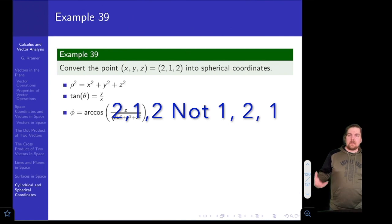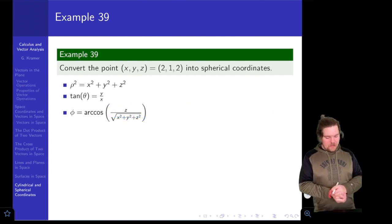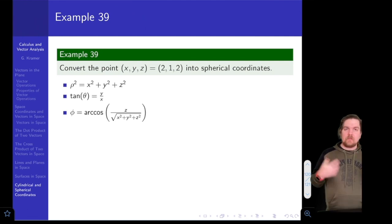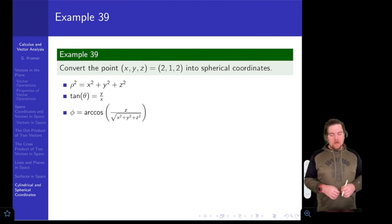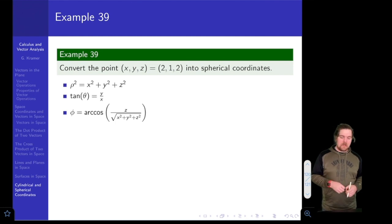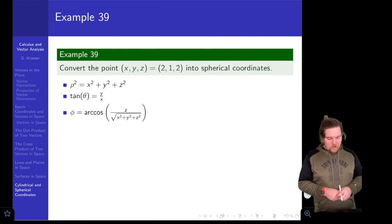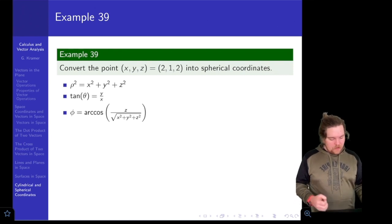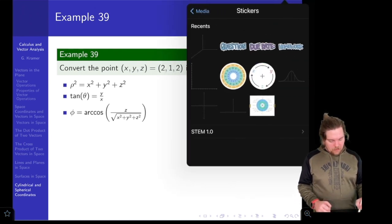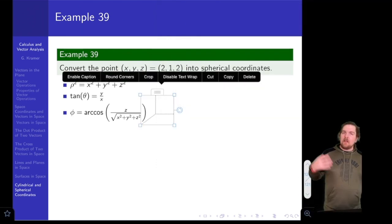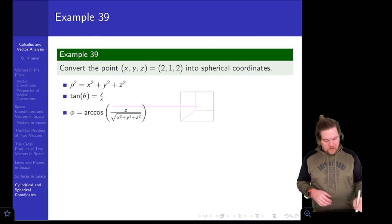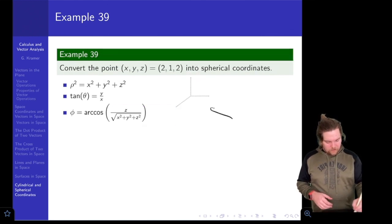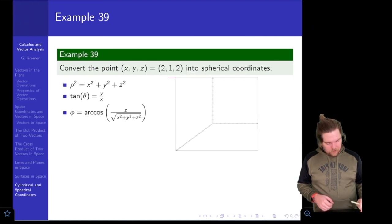Let's get started on Example 39. We're asked to convert the point (x, y, z) = (1, 2, 1) into spherical coordinates. The conversions from rectangular to spherical are provided. It might help to plot the point, so let's draw the picture and talk about each value — rho, phi, and theta.